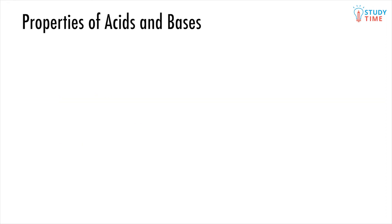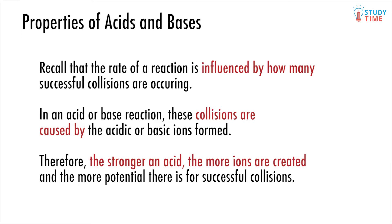What about rates of reaction? A similar idea is at play here. Recall that the rate of a reaction is influenced by how many successful collisions are occurring. In an acid or base reaction, these collisions are caused by the acidic or basic ions formed. Therefore, the stronger an acid, the more ions are created and the more potential there is for successful collisions. This explains why a strong acid can dissolve metal, but we are able to safely drink citric acid, because a lack of collisions prevents the damaging reaction from occurring.